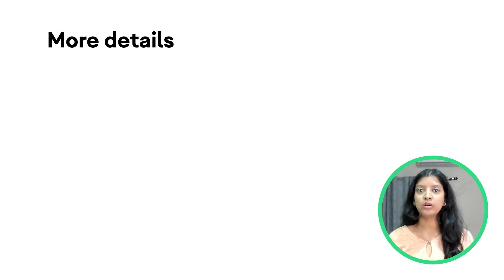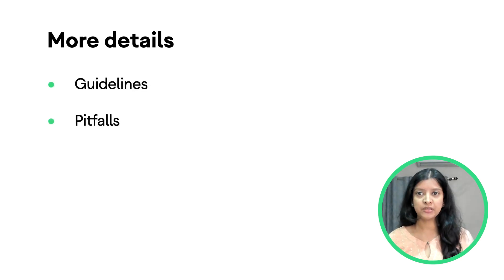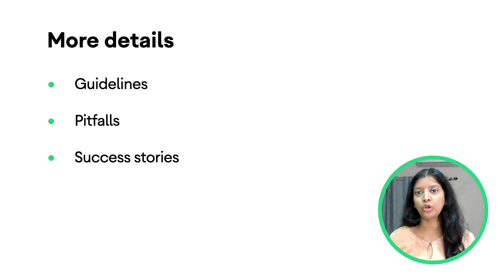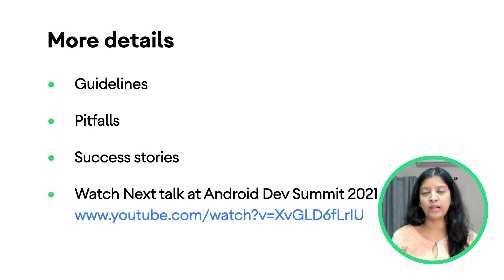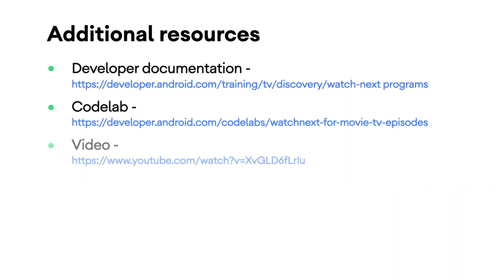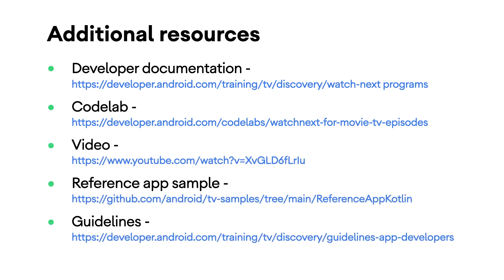Additionally, we've also covered guidelines, edge cases, and success stories on how top apps drive their app engagement via the Watch Next row in our Android Dev Summit talk, so do check that out as well. To continue learning more, here are some additional resources. The developer documentation is a great starting guide. If you want to see code directly for all the use cases and the guidelines, you could check our code lab specifically made for episodes and movies as well.